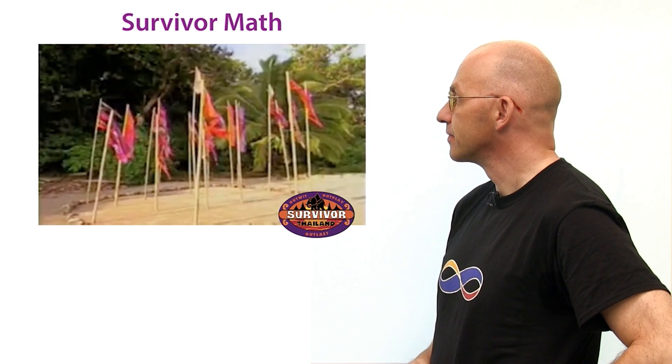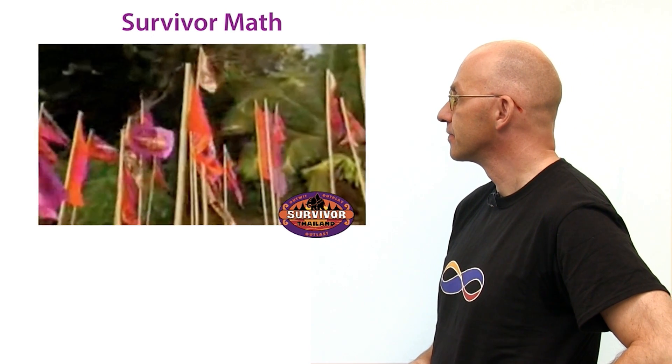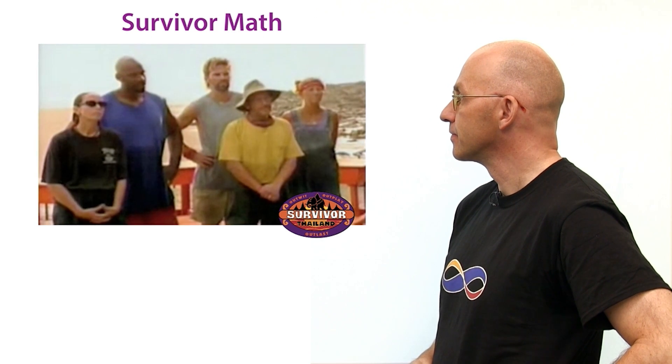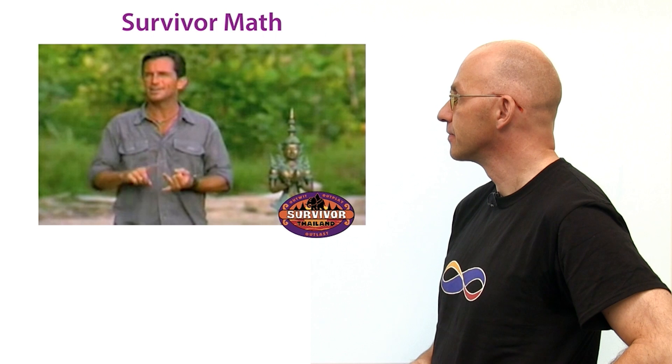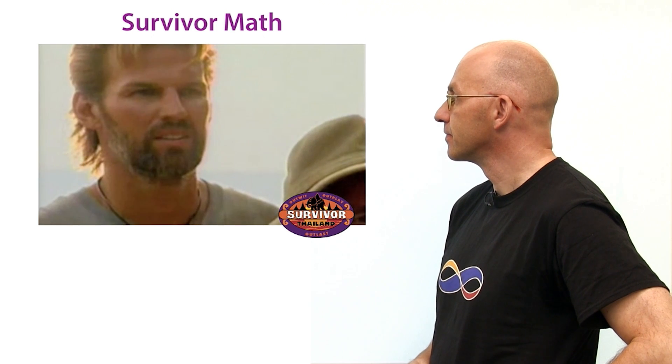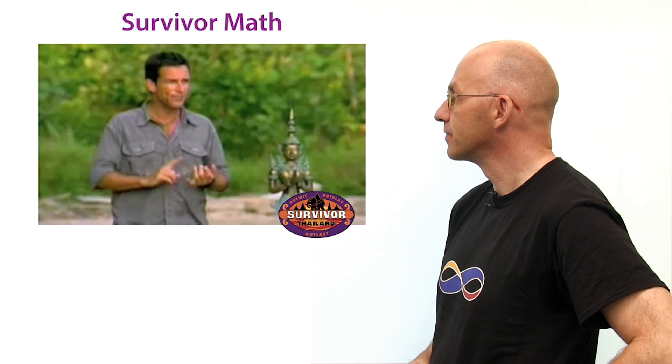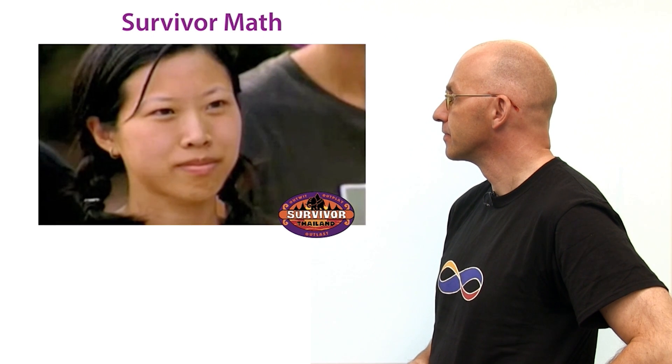There are 21 flags in this circle. Your goal: be the tribe to get the last flag. Here's the twist. On each move, you can only grab one, two, or three flags. So clearly the strategy lies in determining how many flags to grab and when to grab them.